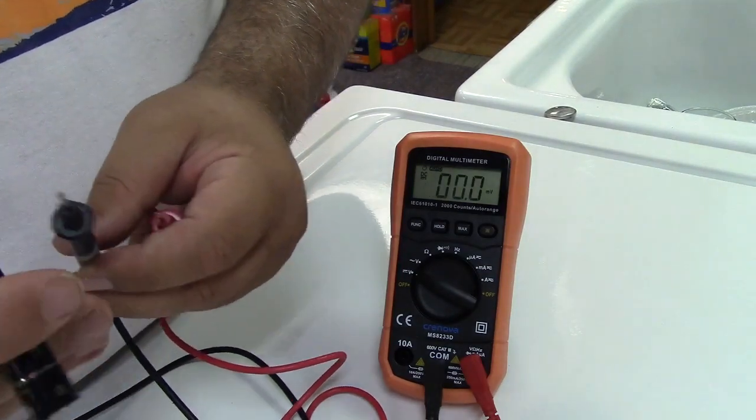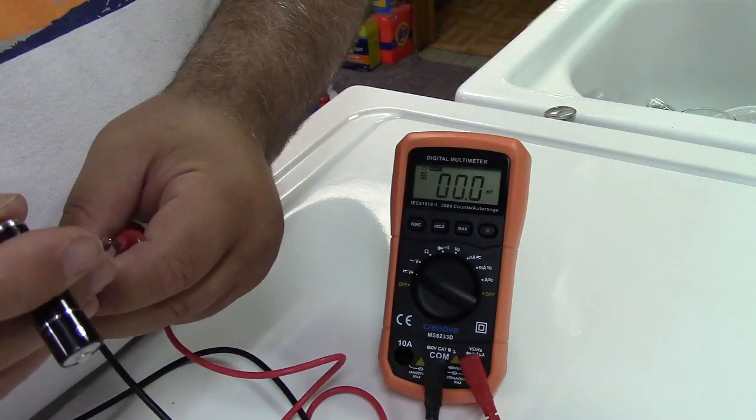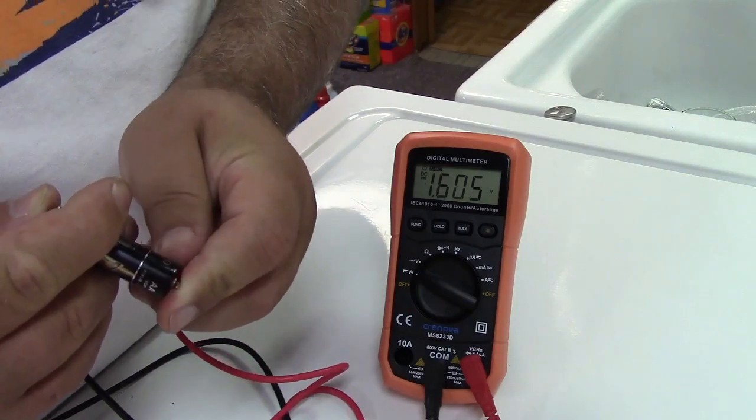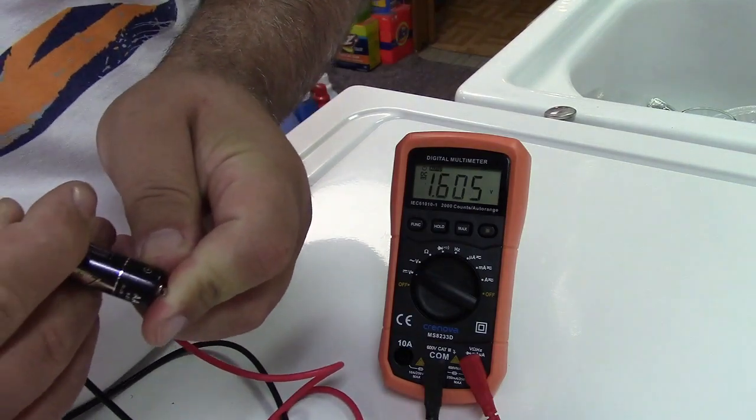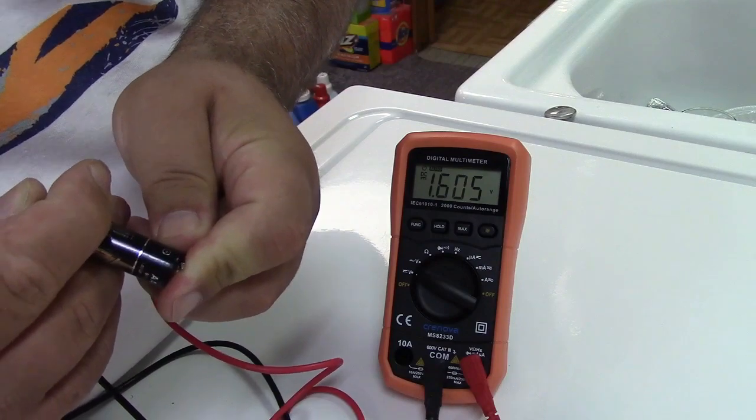Like I said, it's auto ranging. So if you go up to higher voltage ranges, you'll see this one is a little bit lower at 1.605.